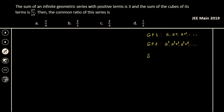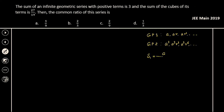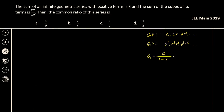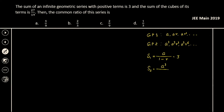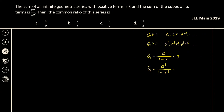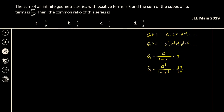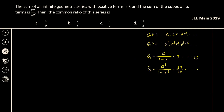For the first GP series, the sum S1 has first term A and common ratio R, so A divided by (1 − R) equals 3. For the second case, S2 has first term A³ and common ratio R³, so A³ divided by (1 − R³) equals 27/19. We call these equation 1 and equation 2.